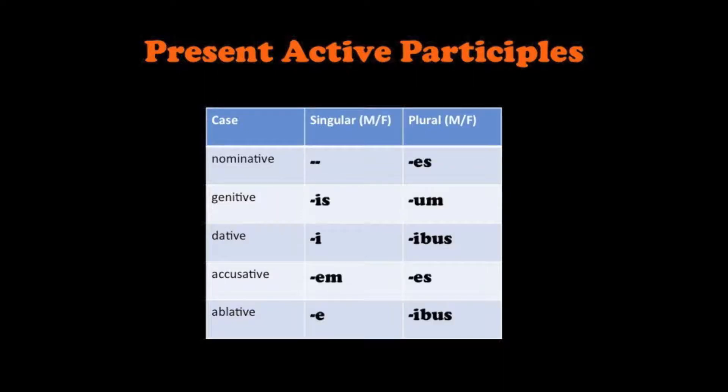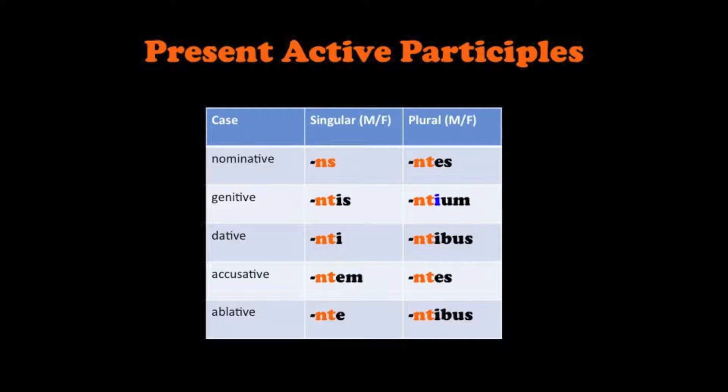So these present active participles take the third declension endings. In the male and female, those endings are: blank, IS, I, EM, E, ES, OM, EBUS, ES, IBUS. When these endings are added on to make the present active participle endings, notice that the blank is replaced by the letters NS. Everywhere else, the ending is NT followed by the third declension ending: NTES, NTE, NTEM, NTE, NTES, NTEUM, NTEBUS, NTES, NTEBUS. You might have noticed those weren't exactly the third declension noun endings — there's an extra I thrown in the genitive plural, just like in third declension adjective endings: NTEUM.